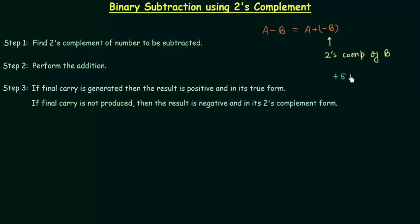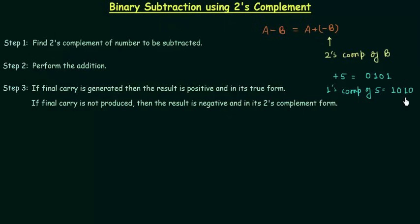For example, plus five is equal to 0101. And in order to find out minus five, first of all you have to find the one's complement of plus five. One's complement of five is equal to 1010. And in order to calculate the two's complement of five, we have to add one to this. So finally the answer is 1011. This is minus five, and it is the two's complement of five. This is very simple and we have already covered this concept.